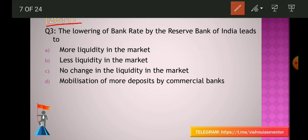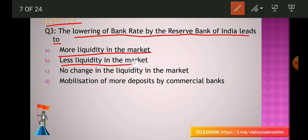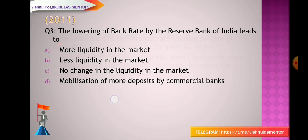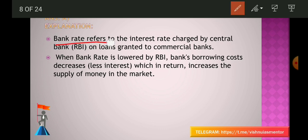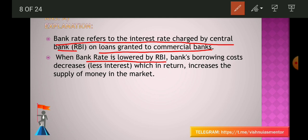From the 2011 question paper: The lowering of bank rate by the Reserve Bank of India leads to — (A) more liquidity in the market, (B) less liquidity in the market, (C) no change in liquidity, (D) mobilization of more deposits by commercial banks. The answer is A — more liquidity in the market. Bank rate is the interest rate charged by RBI on loans to commercial banks. When the bank rate is lowered, banks' borrowing cost decreases, which in turn increases the supply of money, resulting in more liquidity in the market.